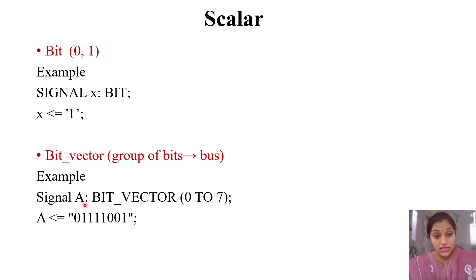For example, signal A is bit_vector 0 to 7, meaning 8 total values. A is assigned as 0, then four 1s, then 001—total 8 bits. You can assign any 8-bit value: all 1s, all 0s, or any combination. When defining bit vector, you can write 0 to 7 or 7 downto 0, since we write MSB on the left and LSB on the right. Both ways are correct.